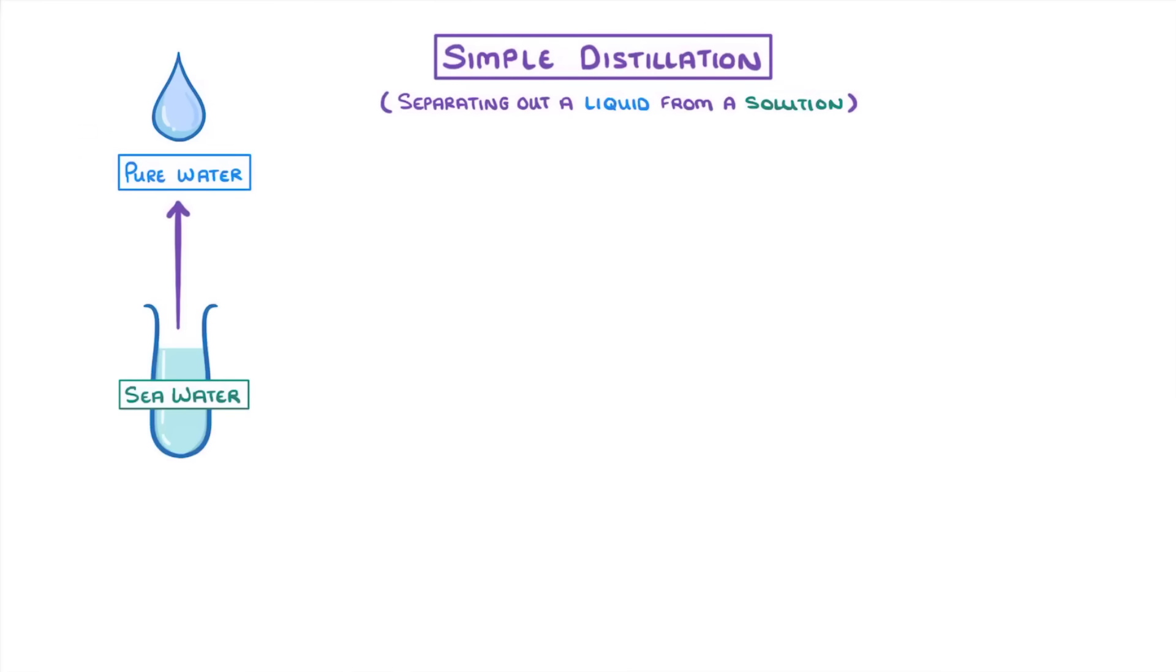Before we cover how it works though, we need to be familiar with the equipment. First we have a flask that contains the solution or the liquid mixture that we're trying to separate, and the flask is sealed at the top with a bung so that no gas can escape. We then put a thermometer through the bung so that we can measure the temperature inside the flask.